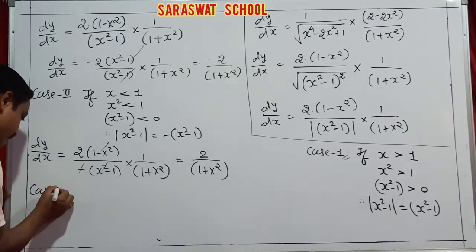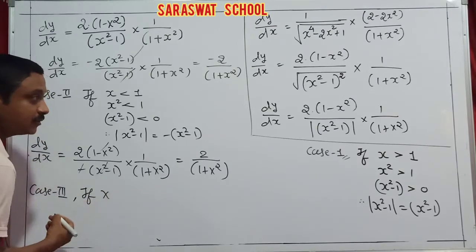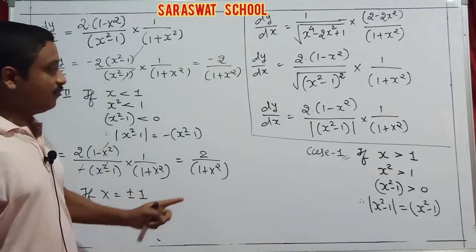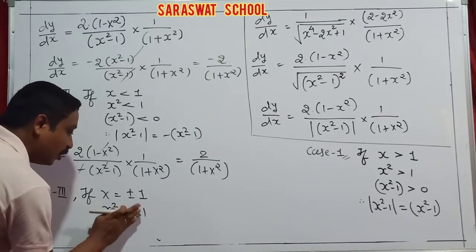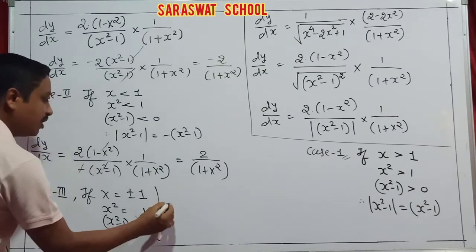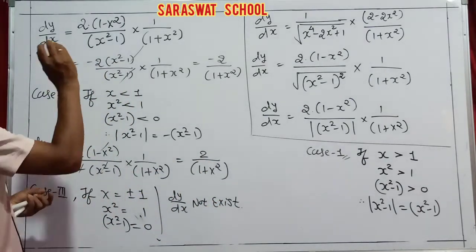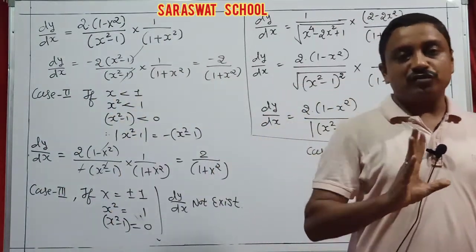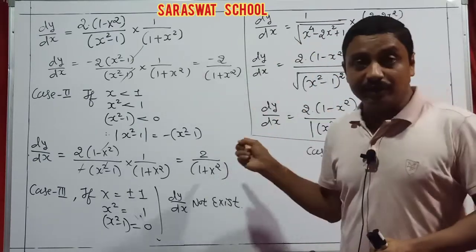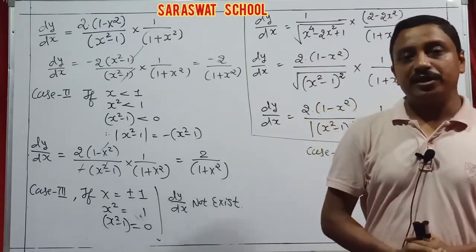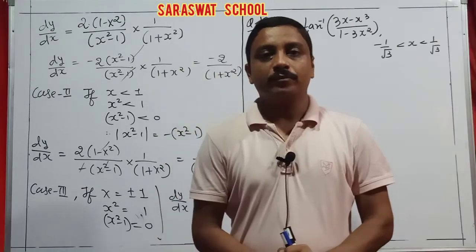Case 3: if x = ±1, then x²-1 = 0, so dy/dx does not exist — not available. So this numerical, a 3-mark question, first takes the direct derivative since no condition is given. If no condition is given, apply the derivative directly. If a condition is given, go suggestion-wise according to your second chapter.